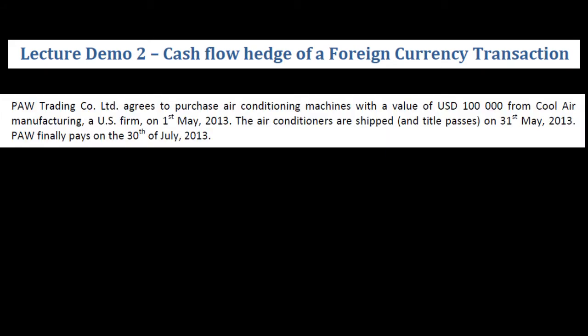So what we have here is a situation where we've got a company, Poor Trading Co, they're purchasing air conditioning machines and those are denominated in US currency. On the 1st of May the air conditioners are shipped on the 31st, and they finally pay on the 30th of July. So let's draw that up as a timeline.